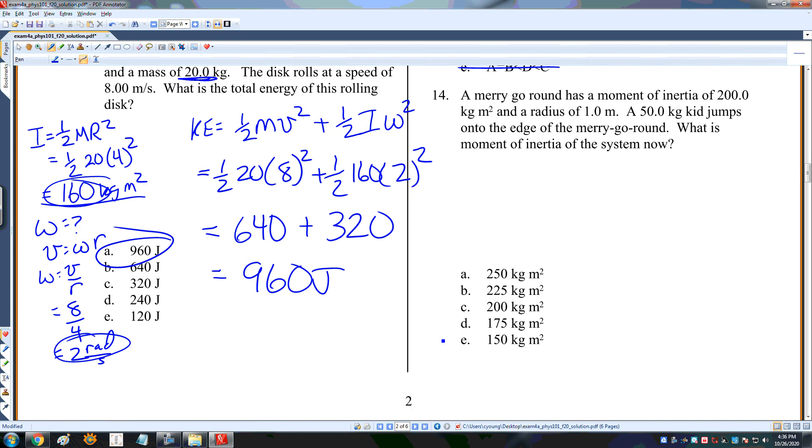The merry-go-round has a moment of inertia of 200 and a radius of 1. A 50-kilogram kid jumps on the edge. What is the moment of inertia? The moment of inertia is that of the merry-go-round, which is 200, plus the particle that jumps on, which is the kid. So that's 200, plus the mass of the kid is 50, times the radius is 1 squared. So that's 250.